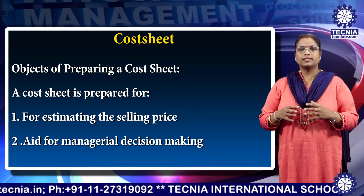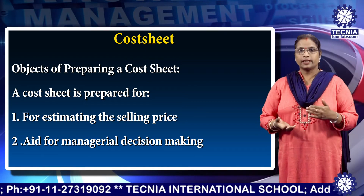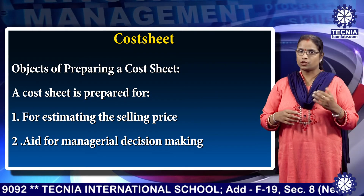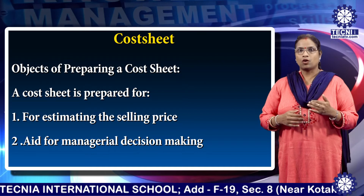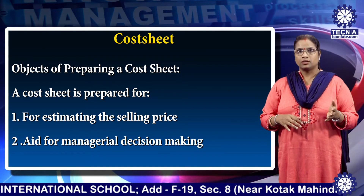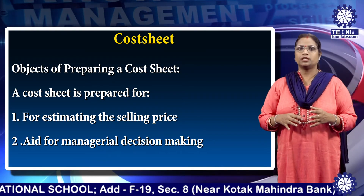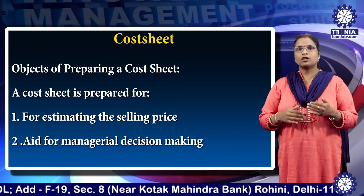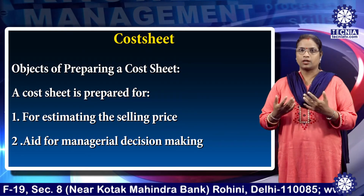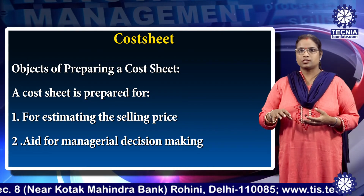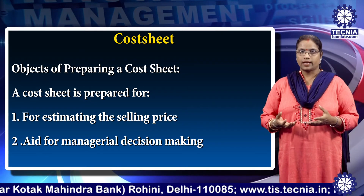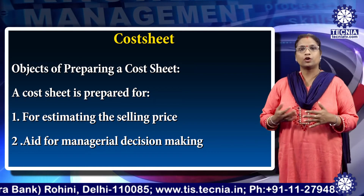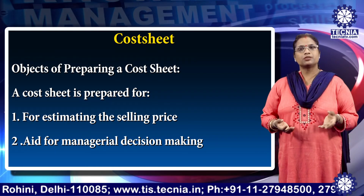Second, as an aid for managerial decision making — the cost sheet helps managers at various levels in the decision-making process, such as make-or-buy decisions to produce or buy a component, what price of goods to quote in the tender, whether to retain or replace an existing machine or asset, how to control cost and maximize profit, and whether to continue with the product or not.